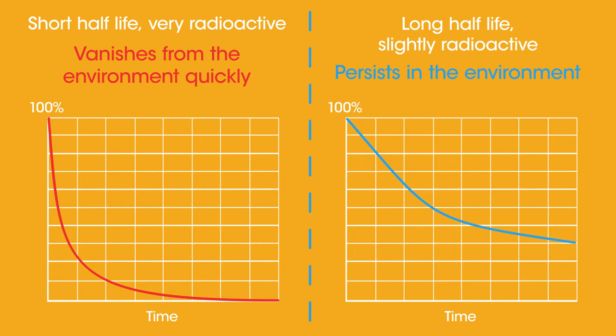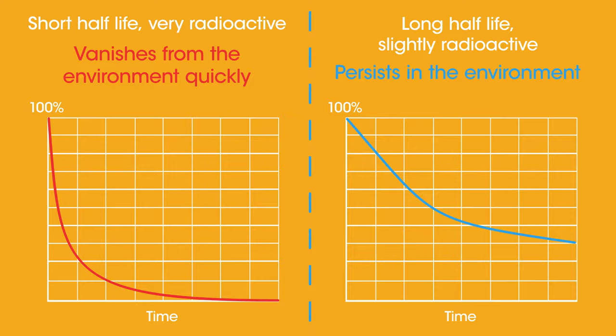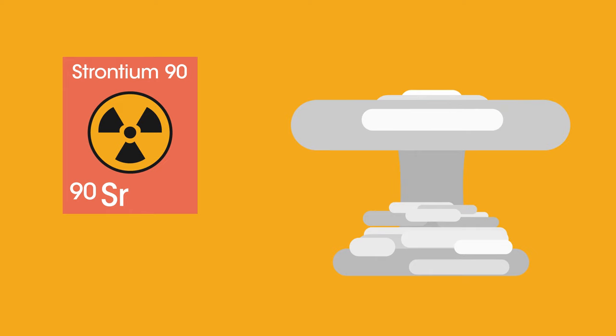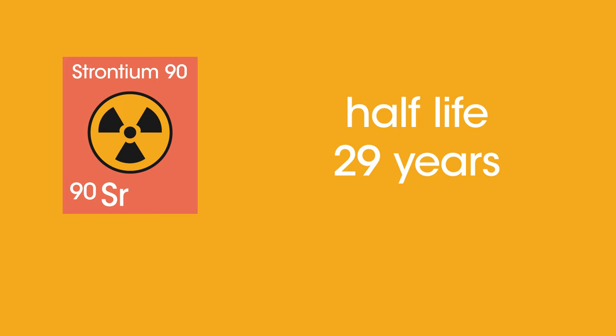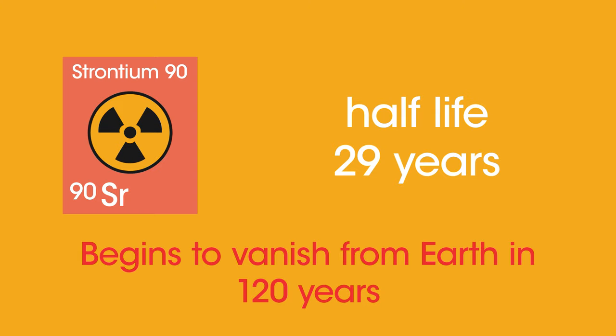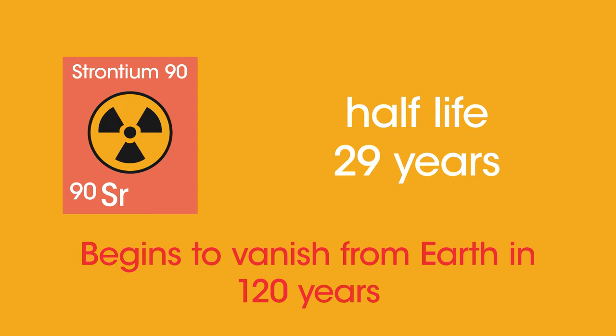Most of the world's population have some strontium-90 in their skeleton, which originates from the atmospheric detonation of atomic weapons, mainly in the 1950s and 1960s. It has a half-life of 29 years. It will take well over 120 years before it begins to vanish from the earth.